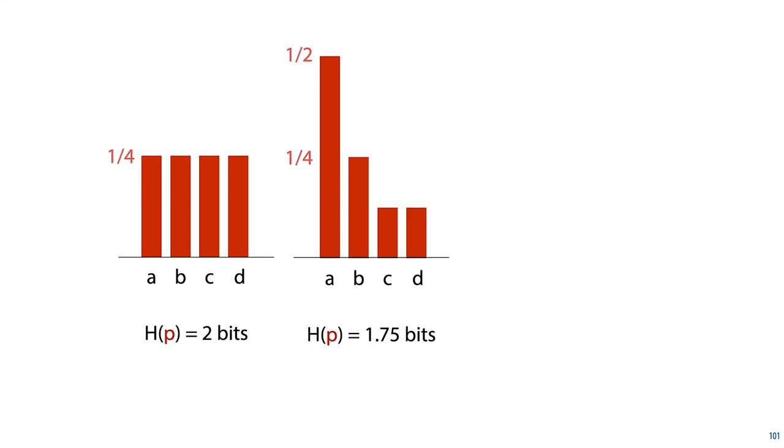If our distribution is not uniform, then we know something about the outcomes. We know that a is more likely than b, and b is more likely than c and d. So what we can do is assign a a shorter code, b a medium code, and c and d longer codes, so that our expected code length is less than the distribution on the left. In this case, the best we can do is 1.75 bits, which is the entropy of this distribution.